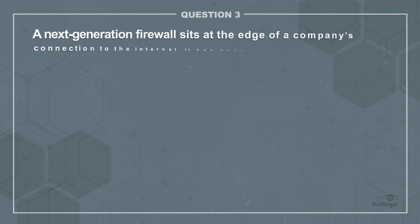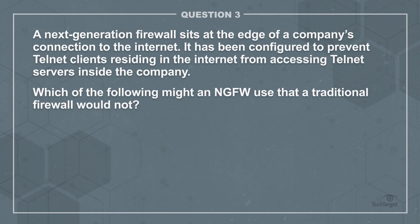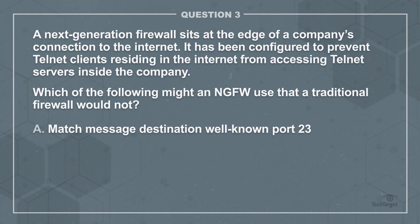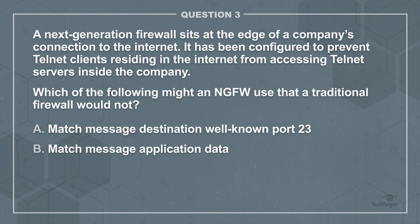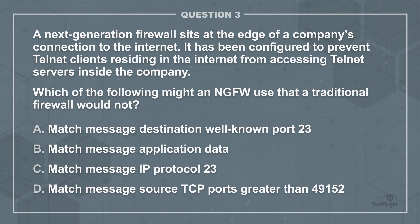Question 3. A Next Generation Firewall sits at the edge of a company's connection to the Internet. It has been configured to prevent Telnet clients residing in the Internet from accessing Telnet servers inside the company. Which of the following might a Next Generation Firewall use that a traditional firewall would not? A: Match Message Destination Well-known Port 23. B: Match Message Application Data. C: Match Message IP Protocol 23. Or D: Match Message Source TCP Ports Greater than 49,152. The correct answer is B.